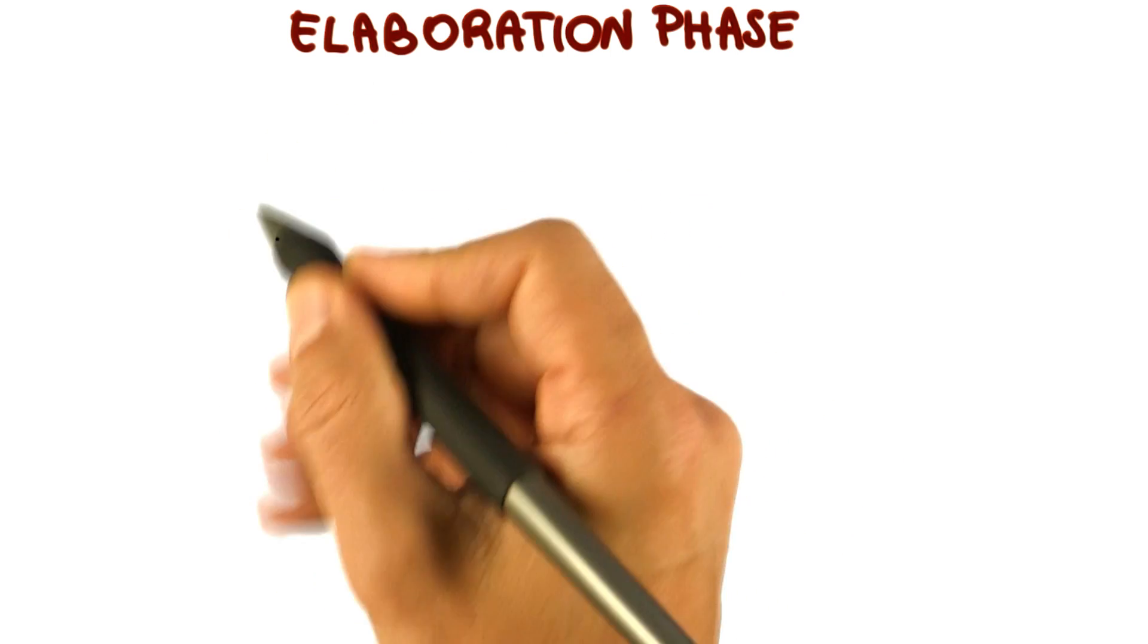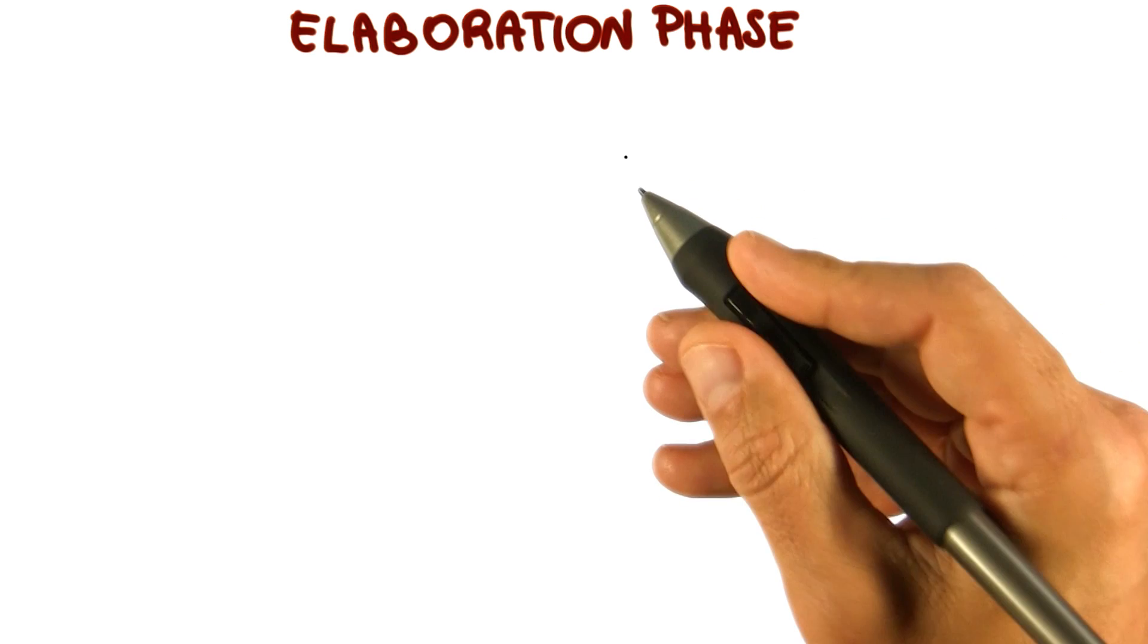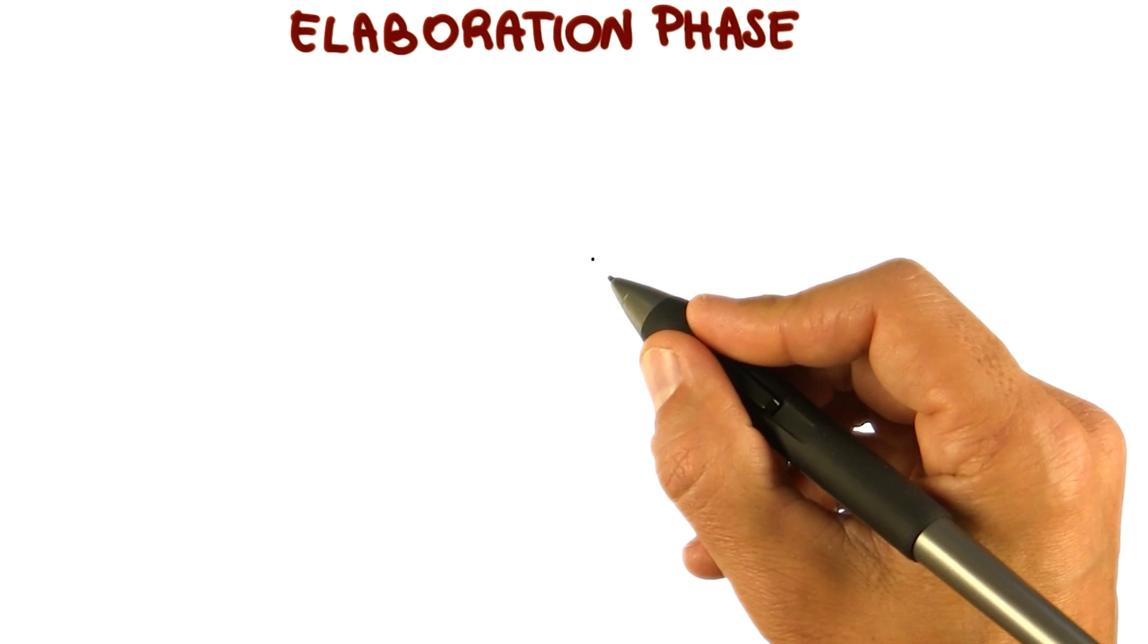Now that we discussed the inception phase, let's move to the second phase of RUP, which is the elaboration phase. There are four main goals and activities for the elaboration phase.